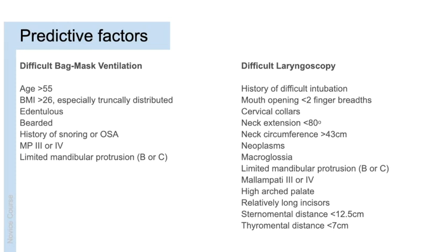Predictive factors for difficult bag mask ventilation include: age over 55, BMI greater than 26 (especially if trunkally distributed), absence of teeth, presence of a beard, history of snoring or OSA, modified Malampati score of 3 or 4, and limited mandibular protrusion (grade B or C on the protrusion test, or score 2–3 on the upper lip bite test).